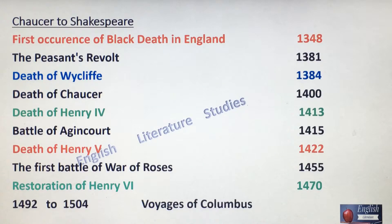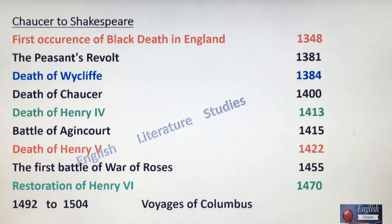First occurrence of Black Death in England, 1348. The Peasants' Revolt occurred in 1381. Death of Wycliffe in 1384. Death of Chaucer, 1400.